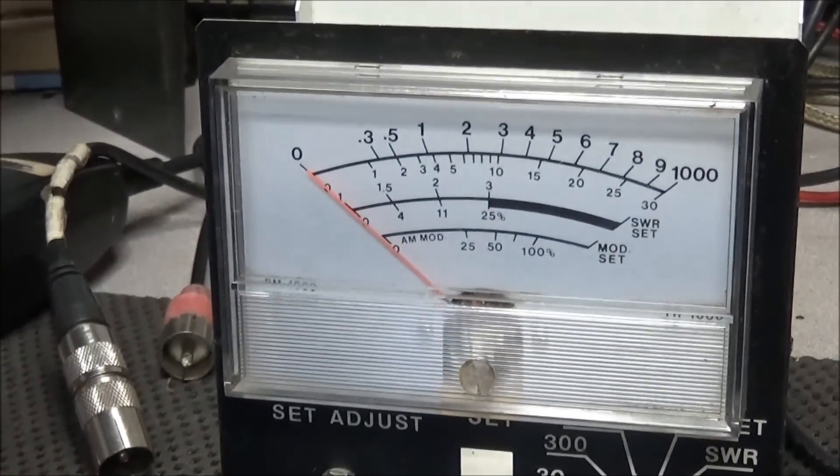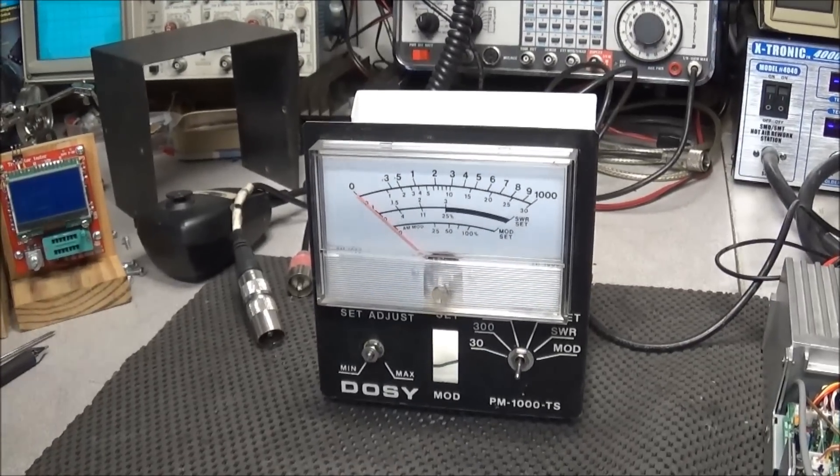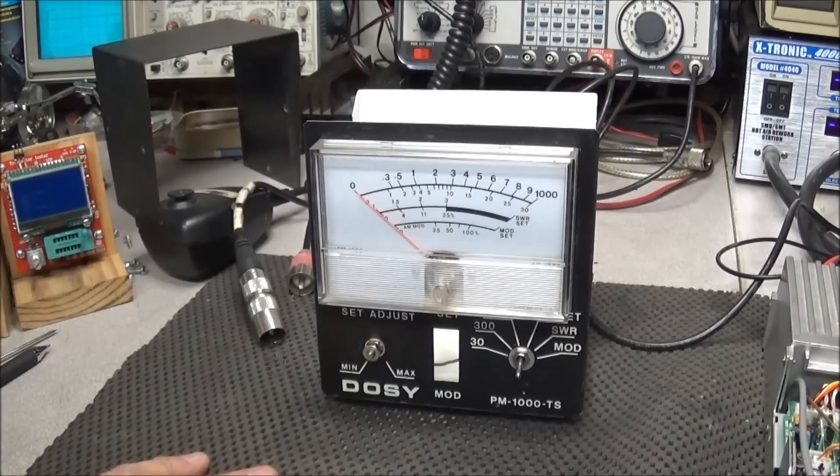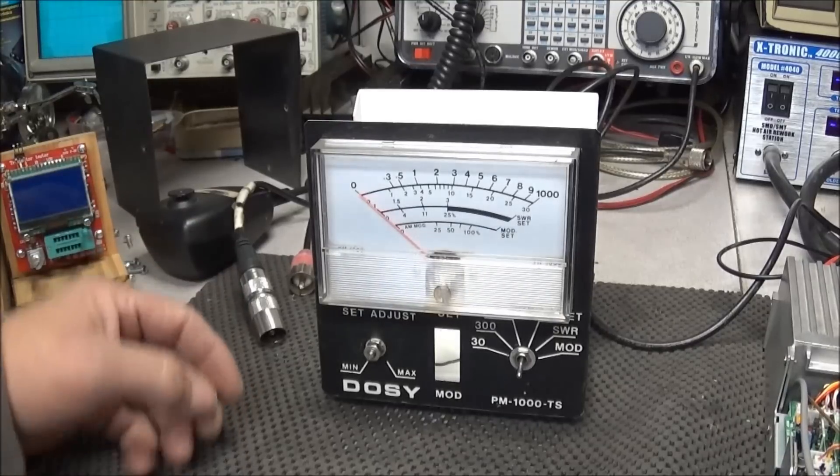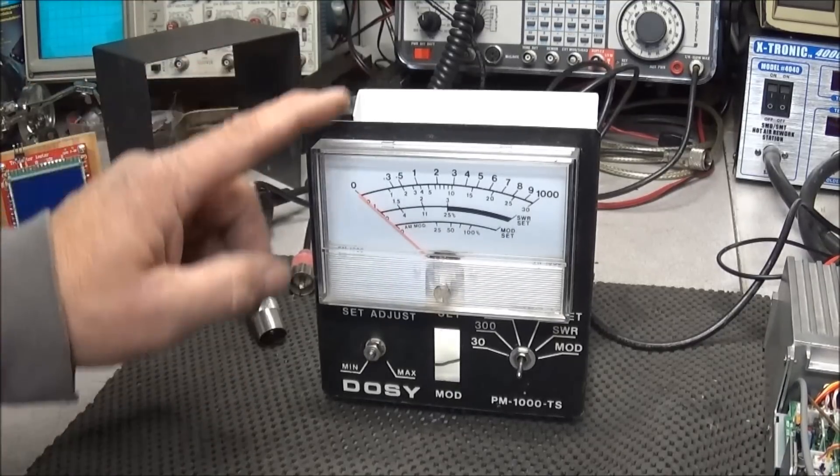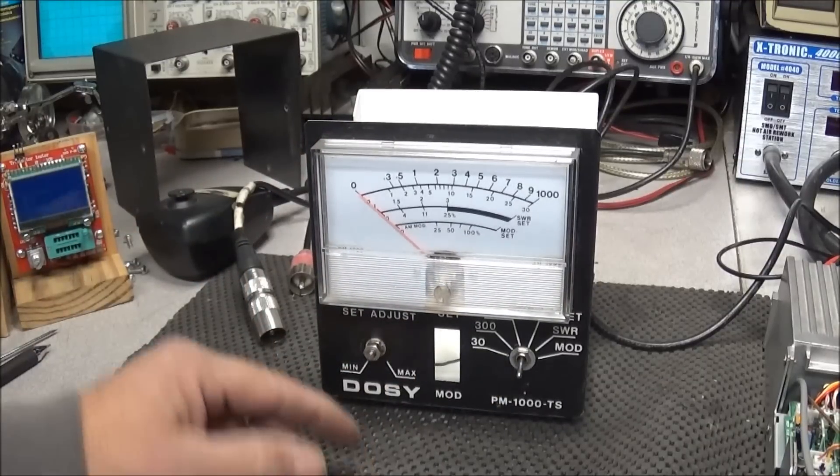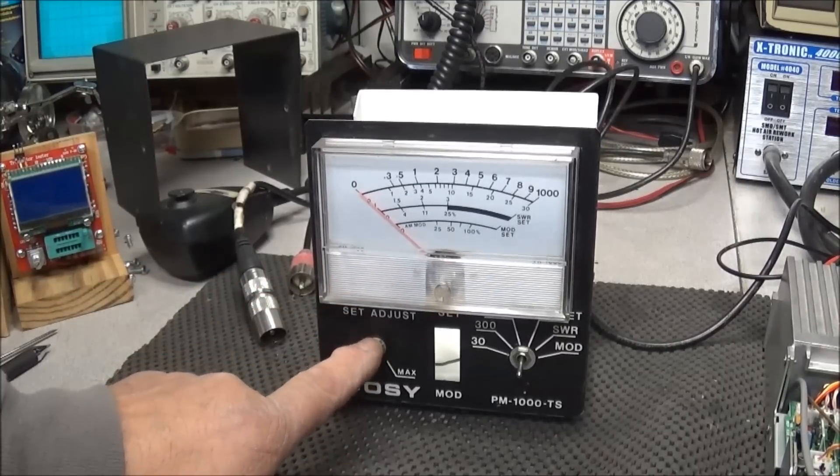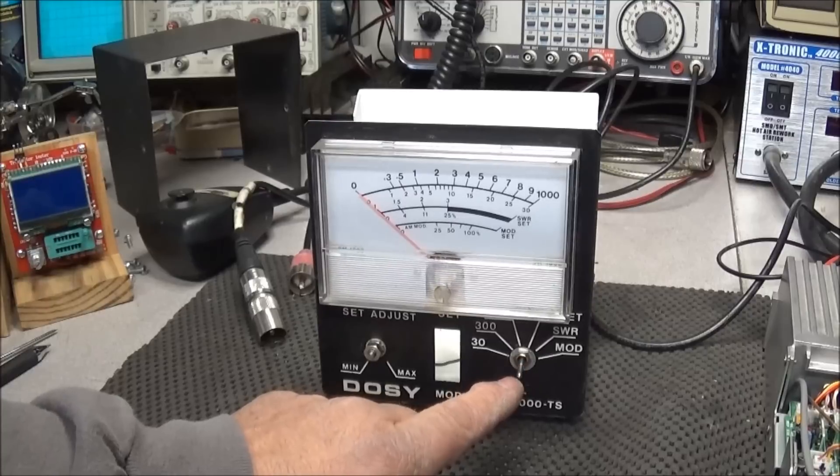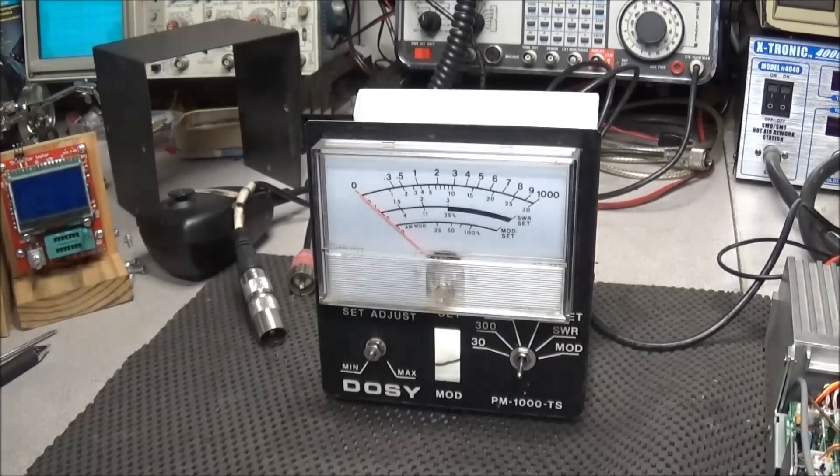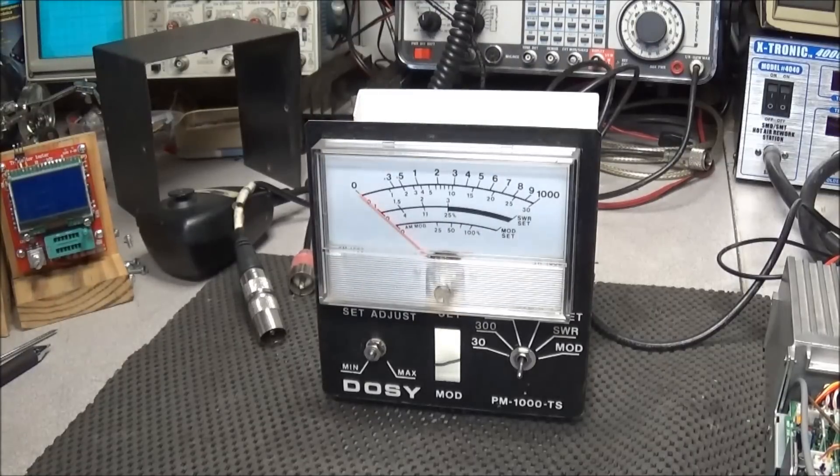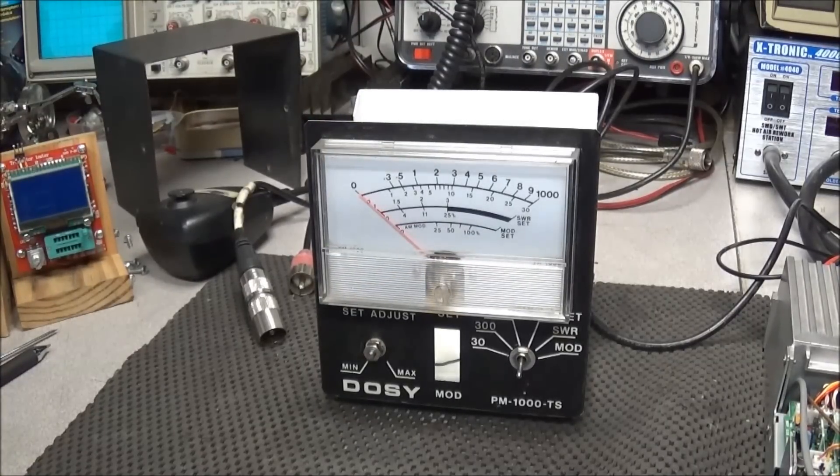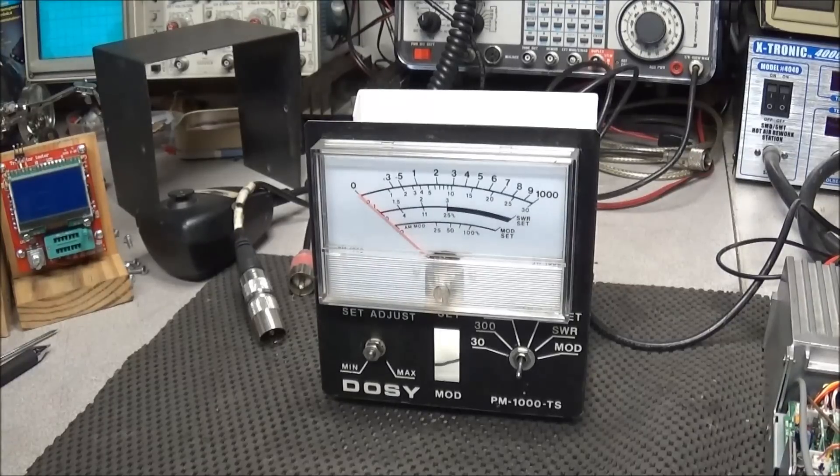Across the terminals we have our 0.01 microfarad capacitor up to the ground lug and then we're going to ground. And that is as simple as this is. Now I threw this thing together probably in about 15 minutes this morning because I wanted to get an actual wattage measurement of this radio. And I'm planning on sitting here and redoing it and shortening up some of the wiring and stuff in it.